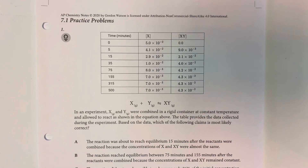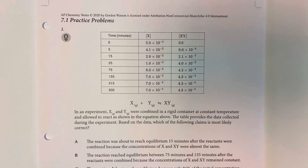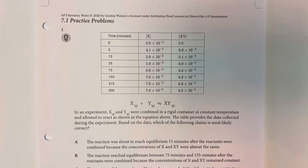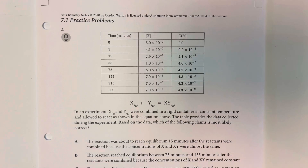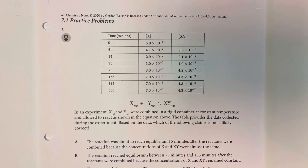7.1 practice problems. In an experiment, X and Y were combined in a rigid container at a constant temperature and allowed to react as shown in the equation above. The table provides the data collected during the experiment. Based on the data, which of the following claims is most likely to be correct?